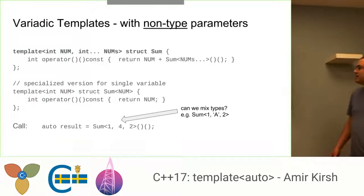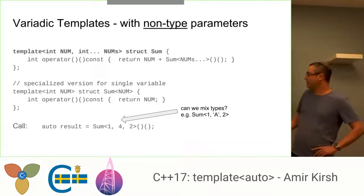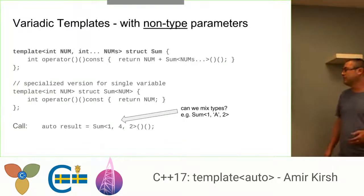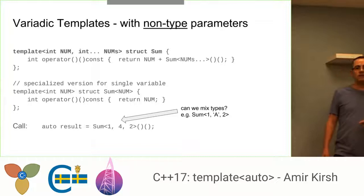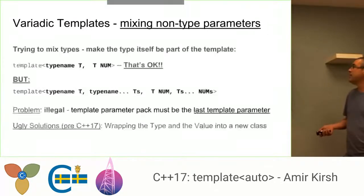And at the end I can call Sum with the template parameters and have the sum of 1, 4, 2 in this example. And now the question is, can I mix types? Can I send here into Sum, into the template parameters of Sum, different types? Like for example, 1 and 'A' and 2. And in this example I'm using char and not floating points because floating point and double are not legitimate as a template non-type parameter, but char is. So can I do that? And the answer is, well, no, you cannot.